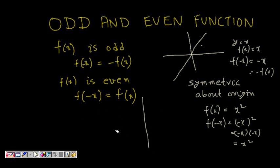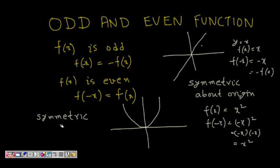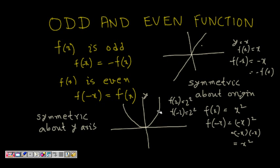Let's see the graph of f(x) = x². If the function is even, it is symmetric about the y-axis. Because f(x) = f(-x): for example, f(2) = 2² = 4 and f(-2) = 2² = 4. Similarly, f(1) = f(-1). So they are equal, and the function is symmetric about the y-axis.